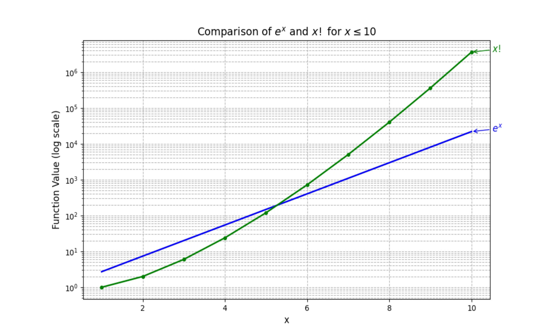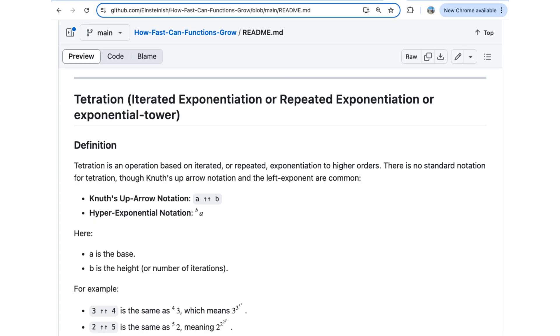Our second function is factorial function. This function grows faster than exponential functions. However, despite its rapid growth, the factorial function is still outpaced by even faster growing functions, such as tetration and Ackermann function.